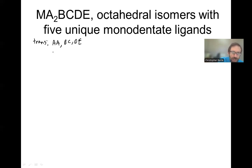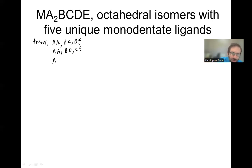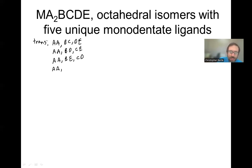So AA with BC|DE is one structure. Next, we can do AA again — instead of BC, we'll do BD, which is next in alphabetical order, and then CE. Those are unique from one another. We'll try AA again: we've done BD, so we'll do BE, and that forces the third pair to be CD.